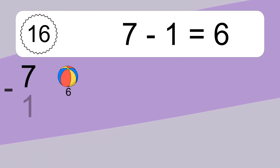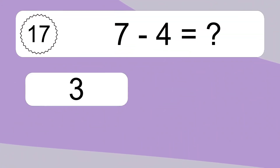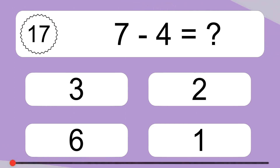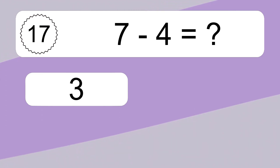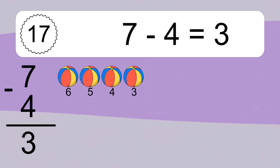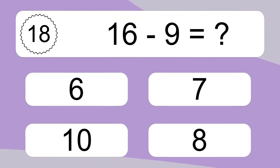7 minus 1 equals 6. Let's count it: 6. 7 minus 4 equals what? 7 minus 4 equals 3. Let's count it: 6, 5, 4, 3.